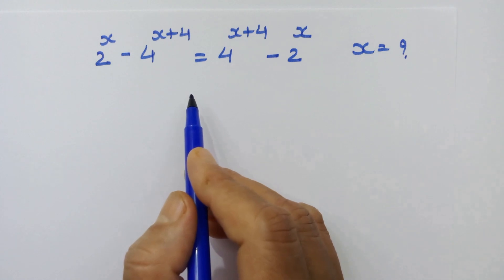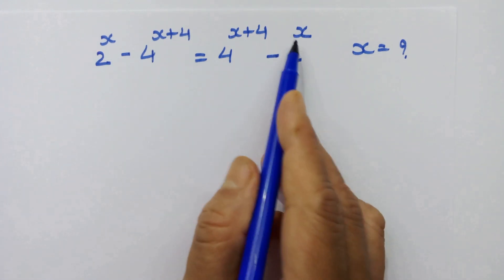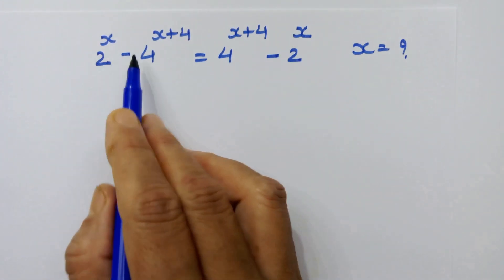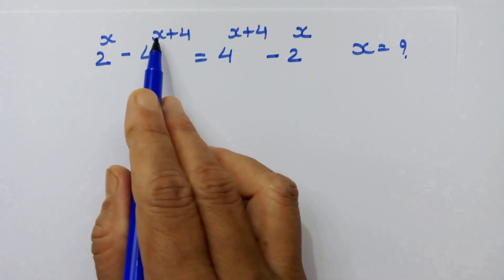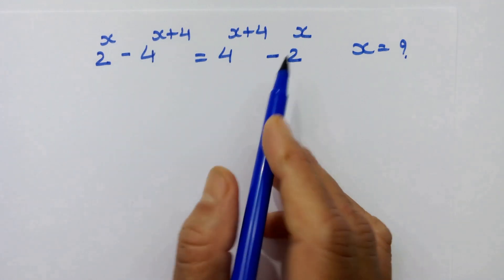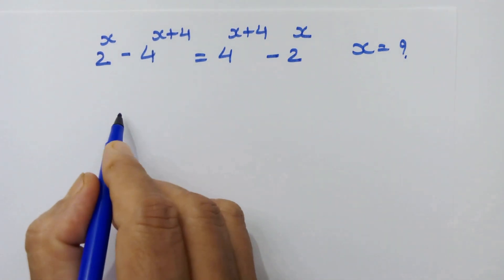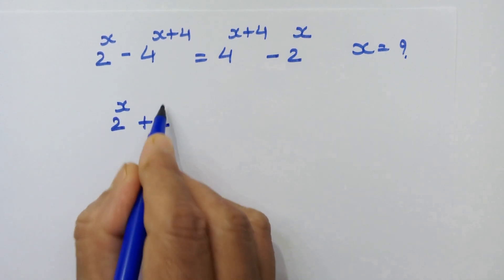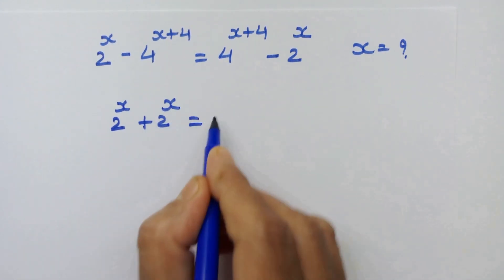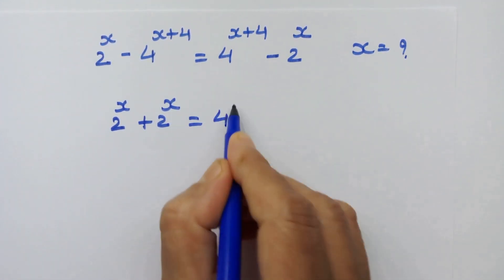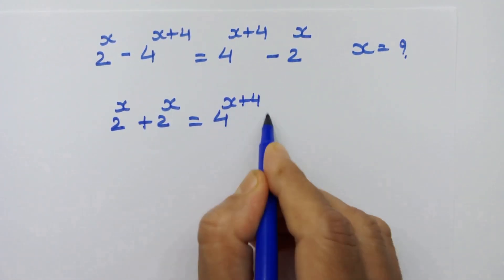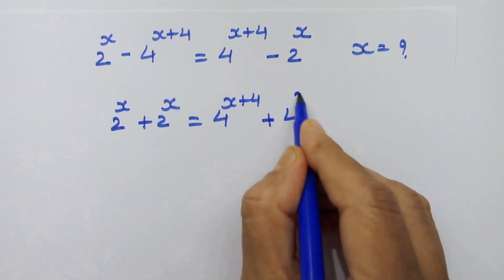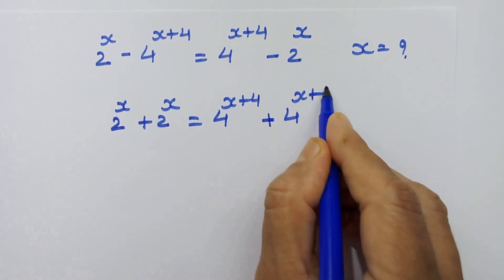What we are going to do is move this minus 2 raised to x to the left hand side and minus 4 raised to x plus 4 to the right hand side. So we have 2 raised to x plus 2 raised to x is equal to 4 raised to x plus 4 plus 4 raised to x plus 4.